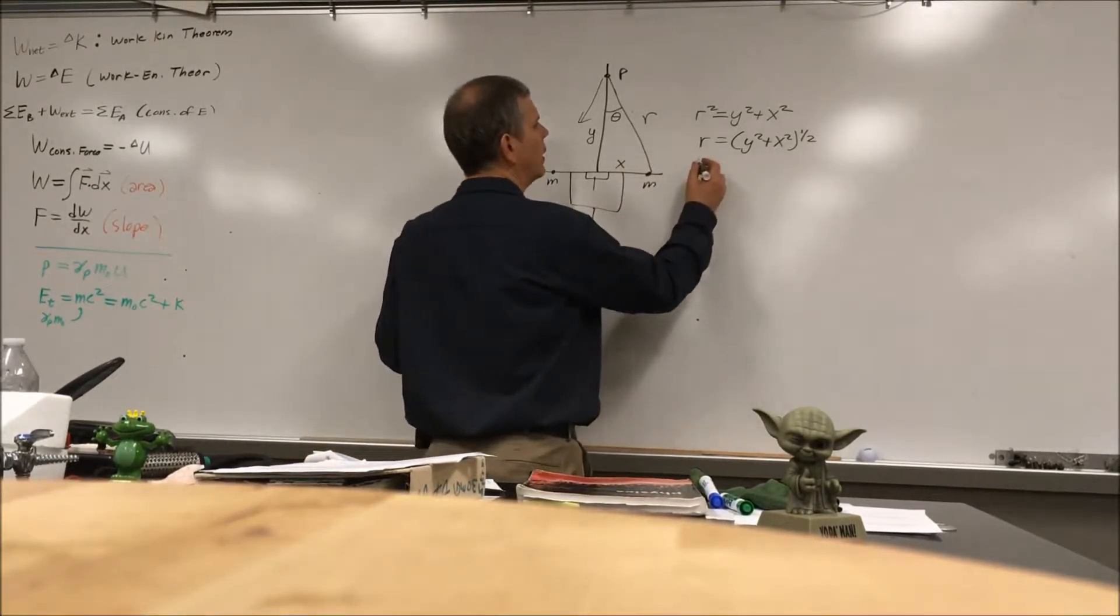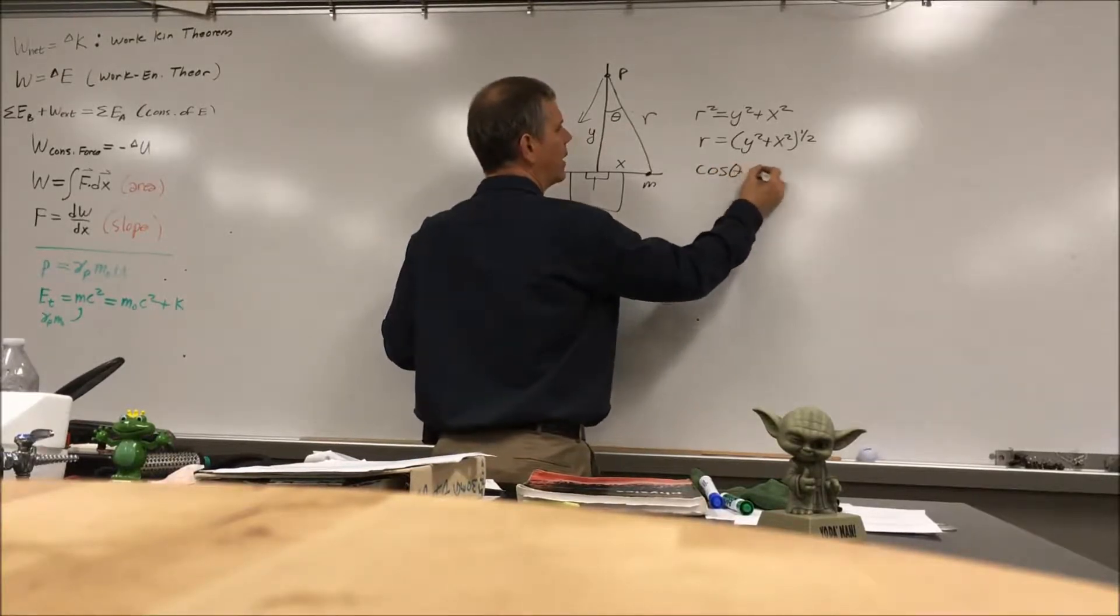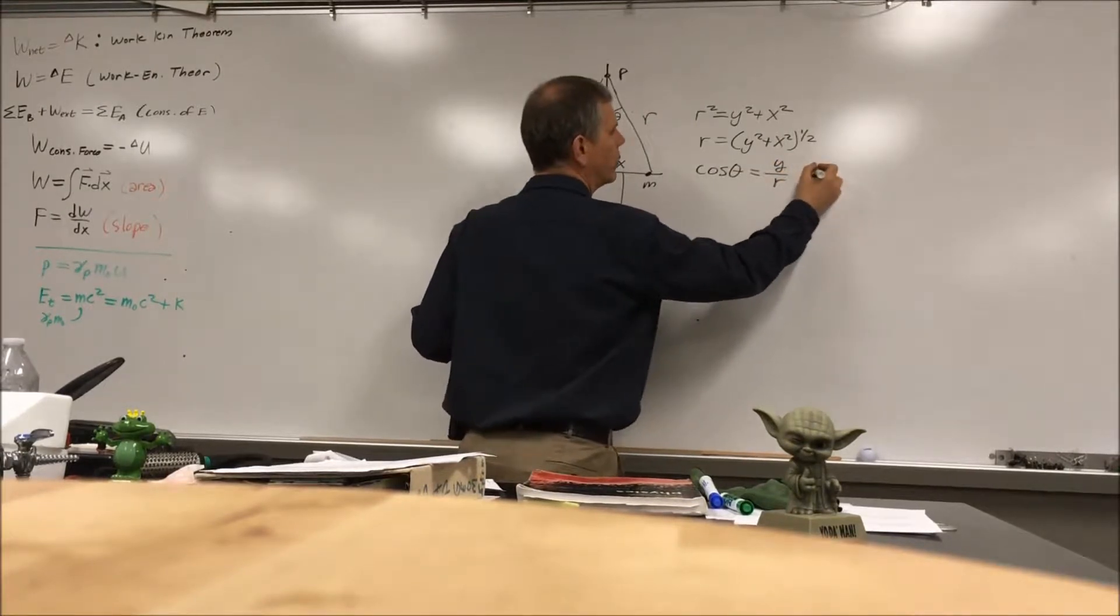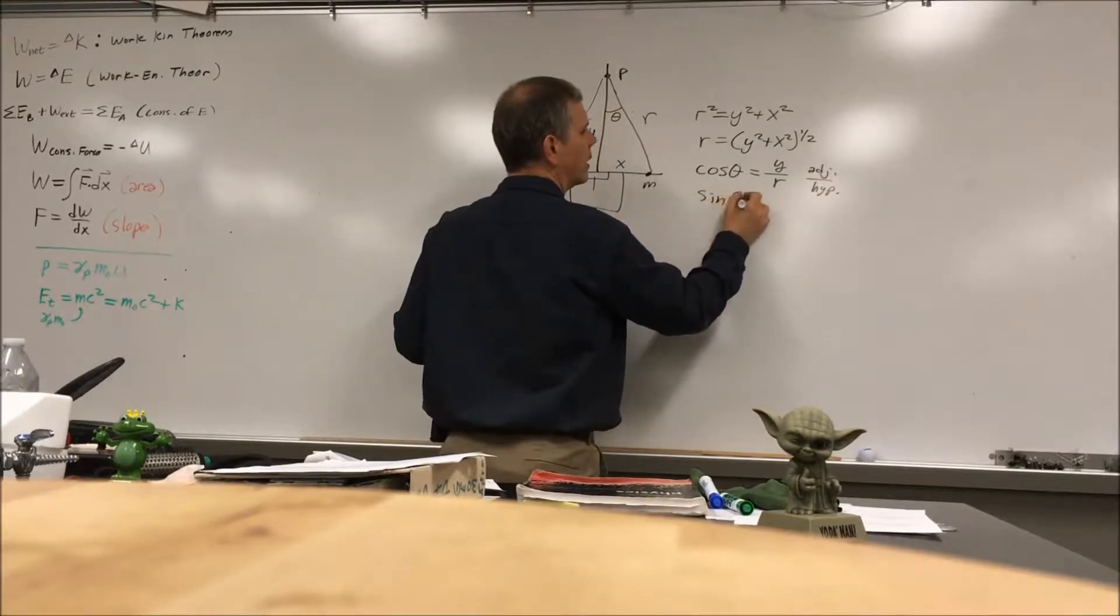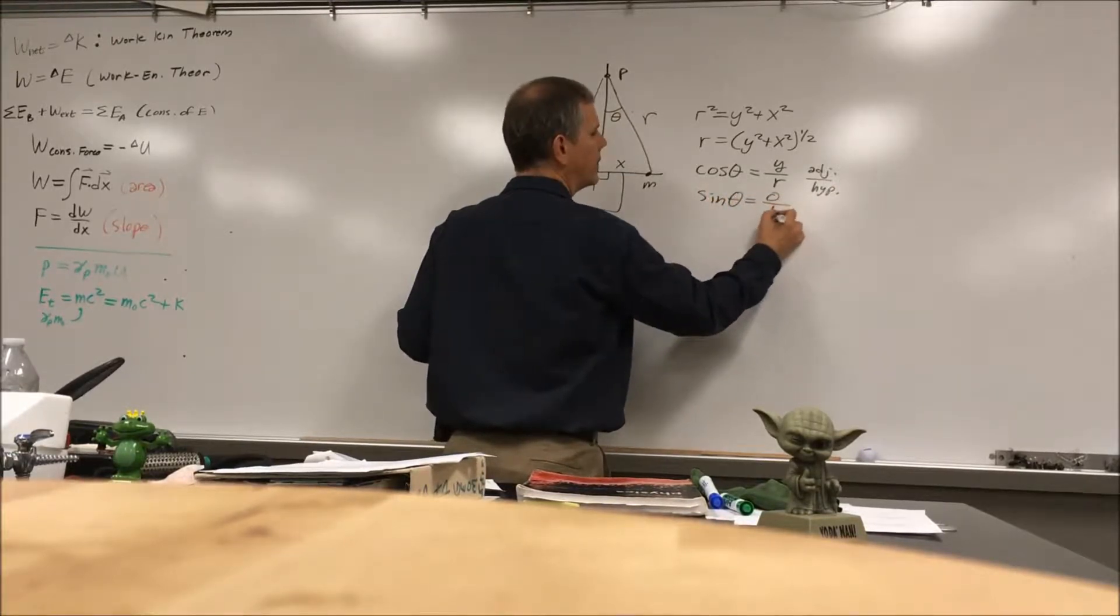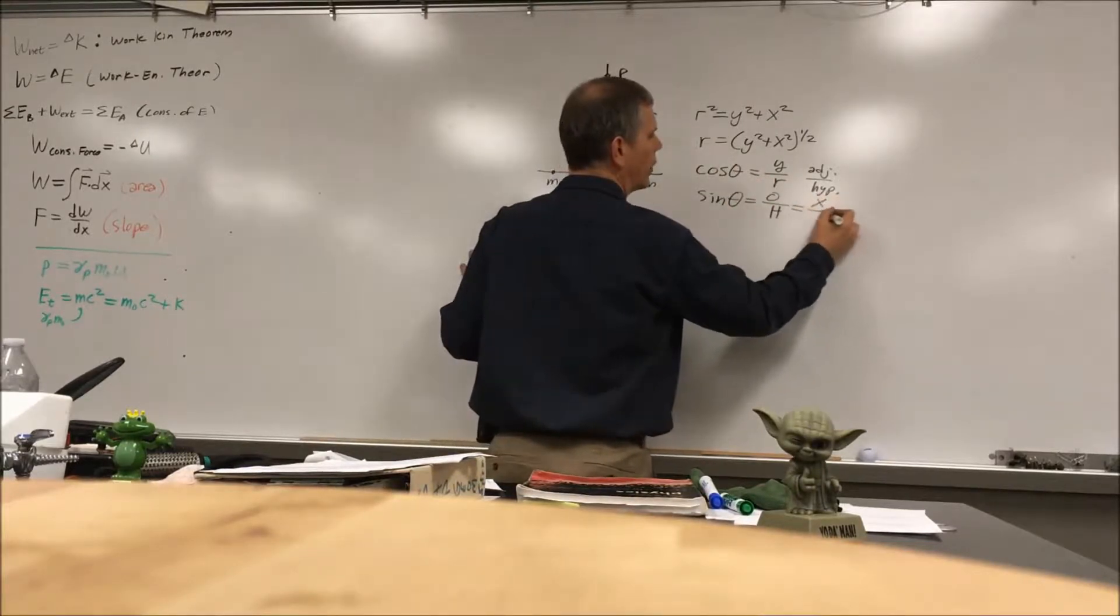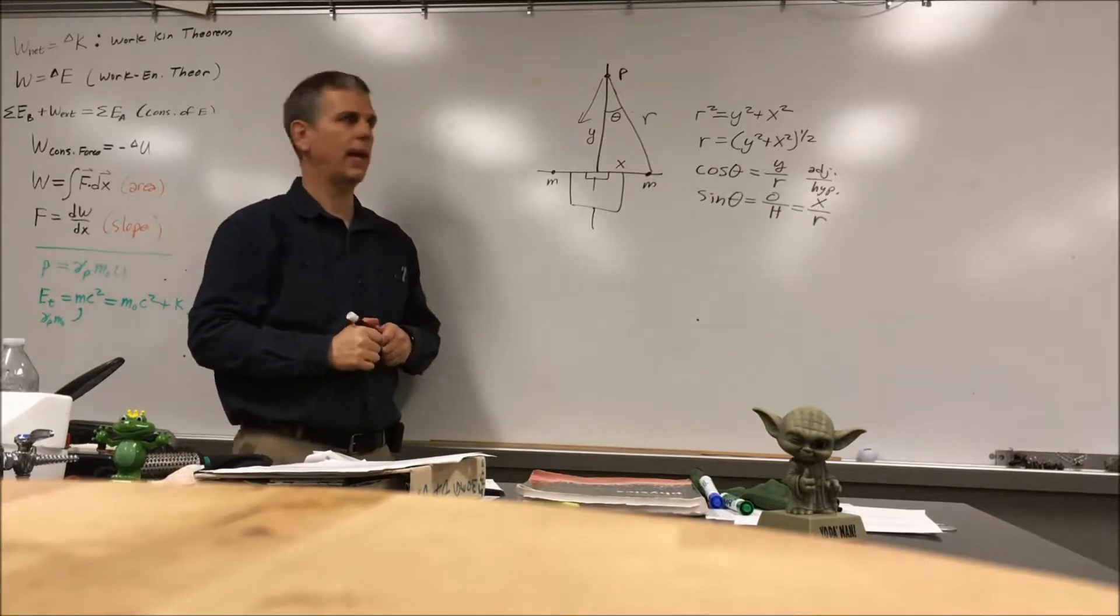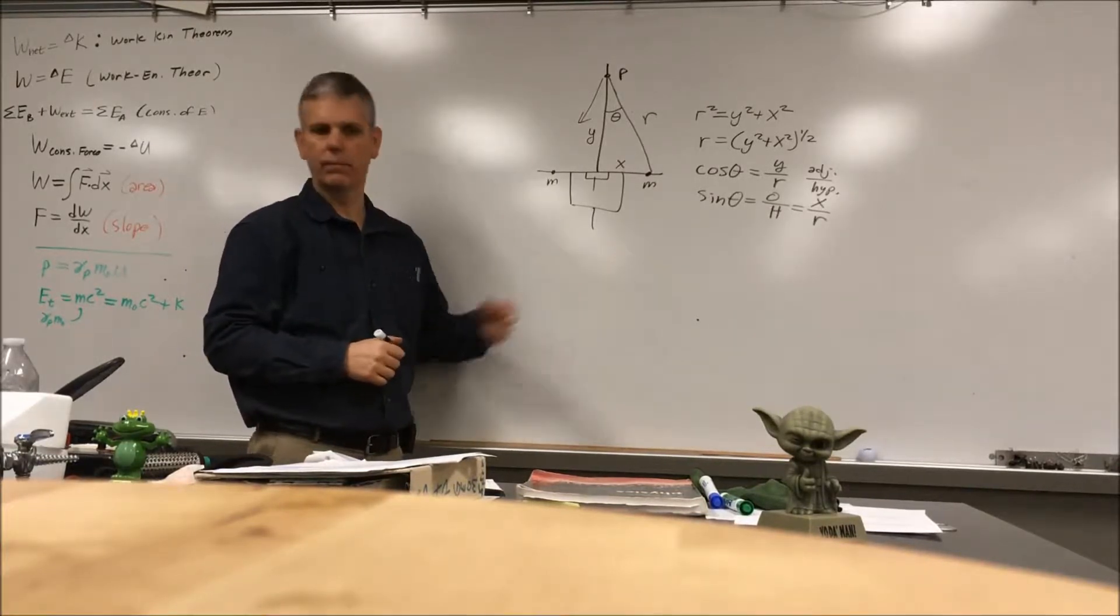We also know that the cosine of theta equals adjacent over hypotenuse, which is y over r, and the sine of theta will equal opposite over hypotenuse, which would be x over r. Which one we use? Well, that would depend. That's our background information. Are we all good with that?